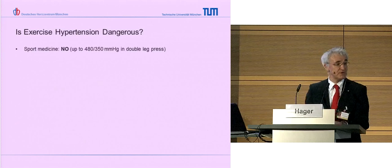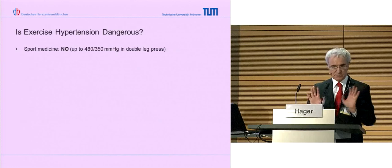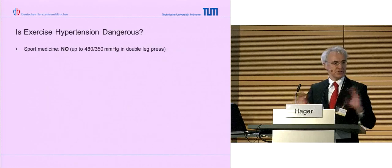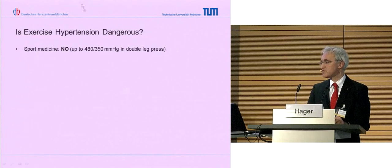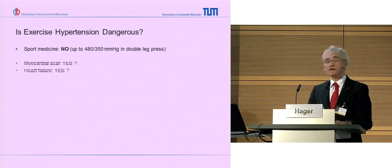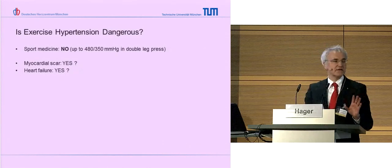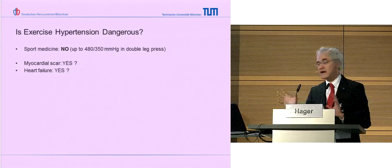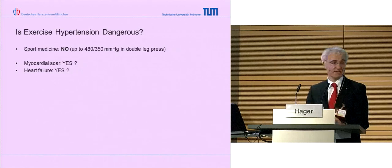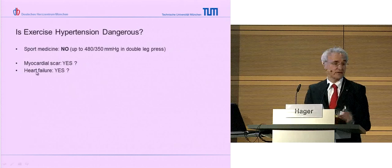If you ask somebody from sports medicine, he says no problem - if you can raise your blood pressure just with a double leg press, both legs pressing in some of these machines, you will raise your blood pressure up to 480 over 350, and nobody worries about that. If you ask somebody from adult cardiology, he will say there might be a myocardial scar, and I don't know how the scar deals with this high blood pressure. So maybe exercise hypertension is dangerous - and if a patient has heart failure also, maybe yes.